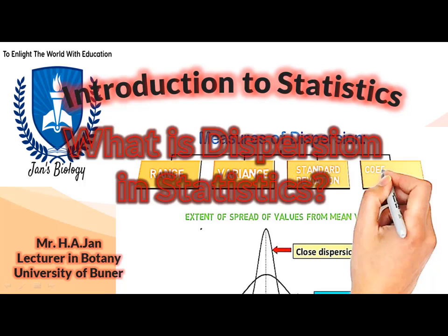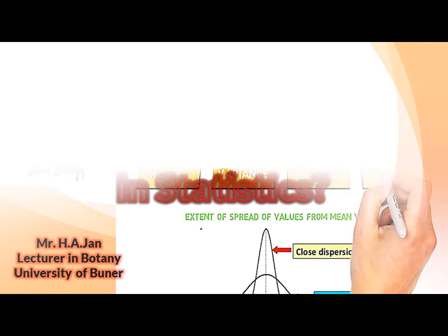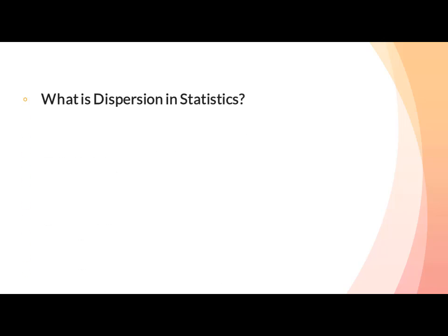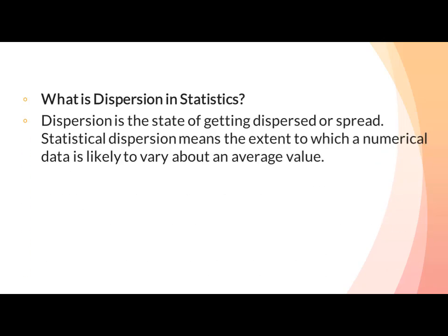Welcome to this online lecture. In this video lecture we will discuss dispersion. What is dispersion in statistics? Dispersion is the state of getting dispersed or spread. Statistical dispersion means the extent to which a numerical data is likely to vary about an average value. In other words, dispersion helps to understand the distribution of the data.